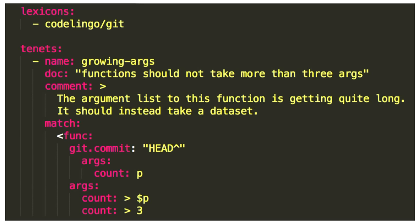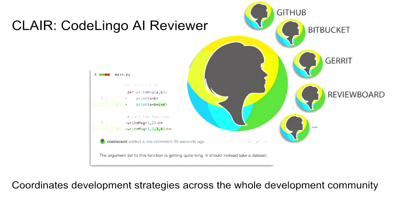This is cool because we're talking about a function, but then we pull in a domain lexicon — and suddenly we're not just talking about a function as a static bit of text in a file. We're actually talking about a function that exists in time. So we can define a pattern that says: find the number of arguments that function has in the previous commit, assign that to a variable, and then in the current commit, does the same function have more arguments than it did in the past commit? That's what enables Claire to do that review.